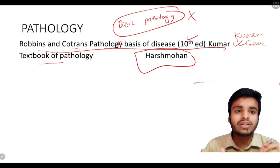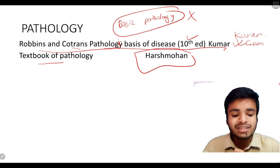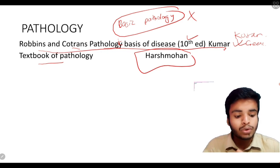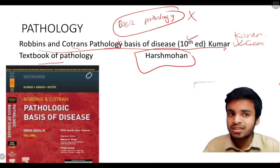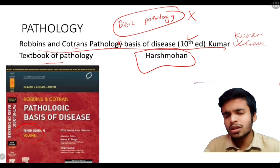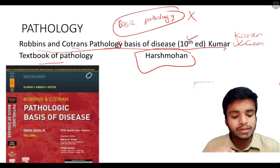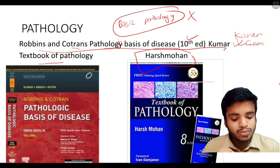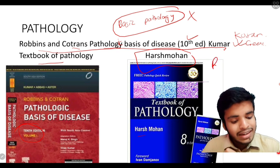For Pathology, if you have any textbook, don't get confused — the international textbook is the Bible, the Quran, the Gita of pathology. Robbins Pathologic Basis of Disease is the standard. Next, there is also an exam preparatory manual.